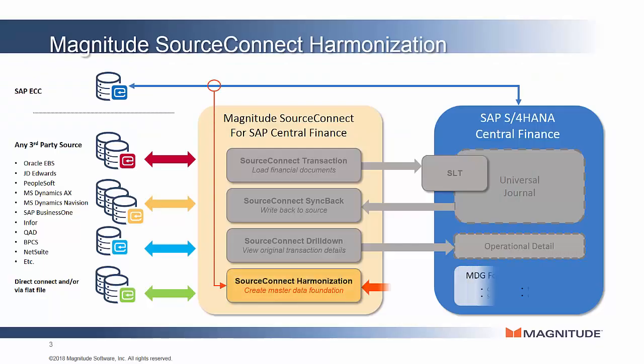Before transactions from any source system can post properly into Central Finance, several categories of reference and master data must be mapped from these source systems into Central Finance and the related MDG foundation. SourceConnect Harmonization focuses on a few of the most complex categories of master data, like customer, vendor, or business partner, material, and GL chart of accounts.